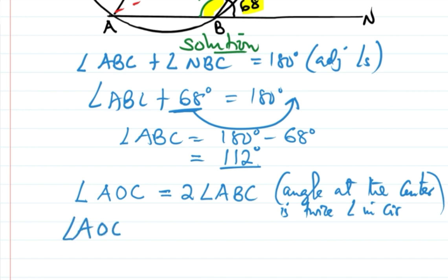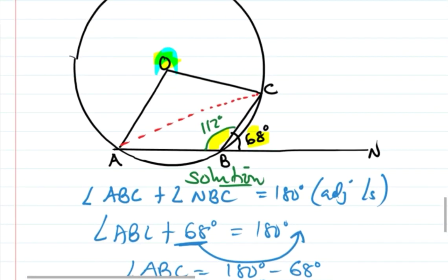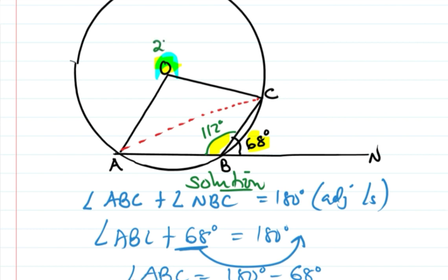Angle AOC — the reflex angle — is equal to two times angle ABC, which is 112 degrees. So two times 112 degrees gives us 224 degrees. The reflex angle AOC is 224 degrees.